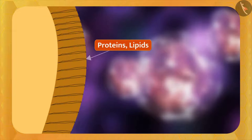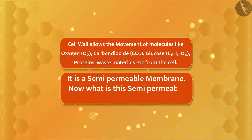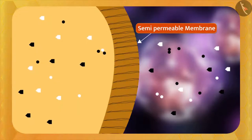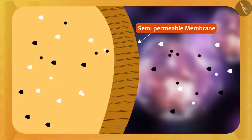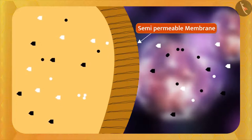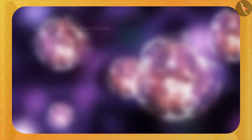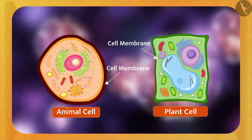The cell membrane is made up of proteins and lipids, which are very important biological molecules — many cell organelles are made up of these. It is a semi-permeable membrane. The semi-permeable membrane allows the passage of certain particles and stops the movement of other particles.